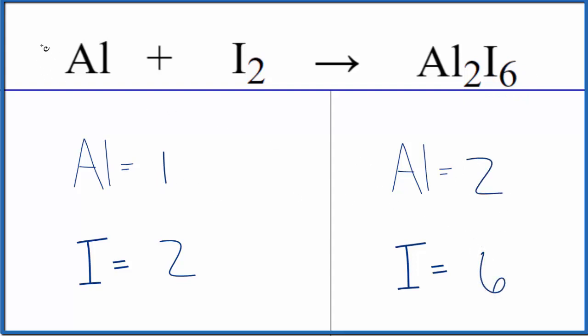For the aluminum, it looks like we could just put a two here. One times two, that would give us two aluminum atoms. And then iodine, we need six, our coefficient of three, two times three, that would give us six. So this is the balanced equation for Al plus I2.